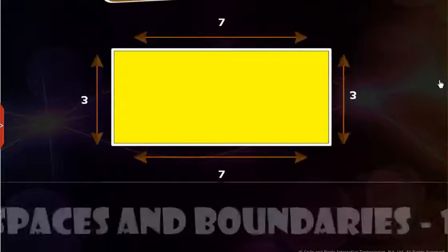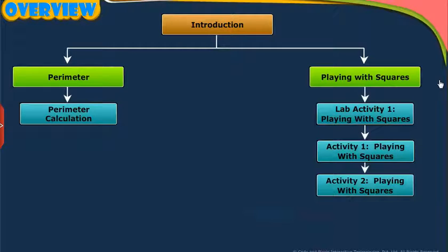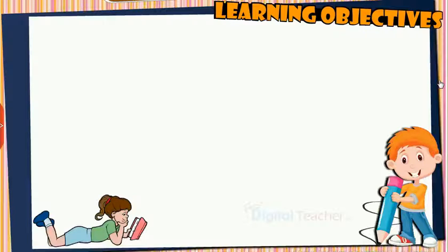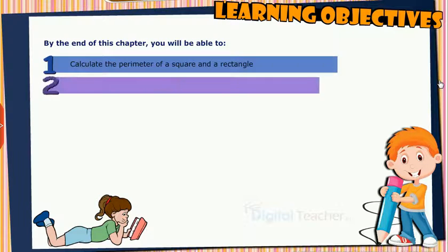Welcome to the chapter Spaces and Boundaries 1. This slide presents the overview of the chapter. Learning Objectives: By the end of this chapter, you will be able to calculate the perimeter of a square and a rectangle, and find the space between objects.